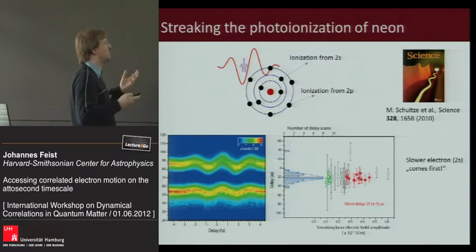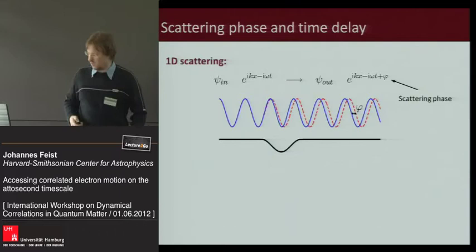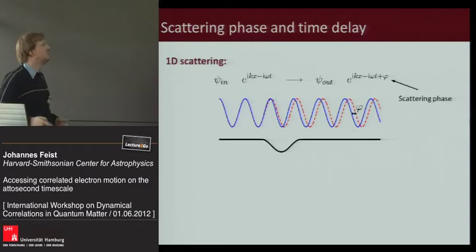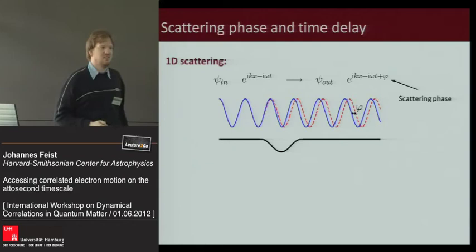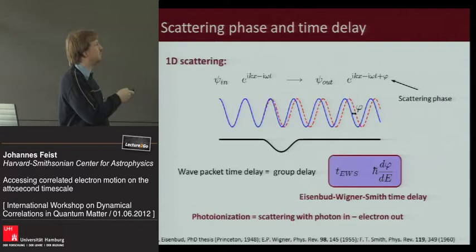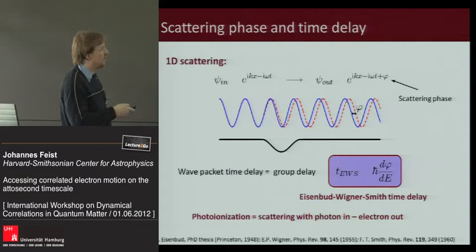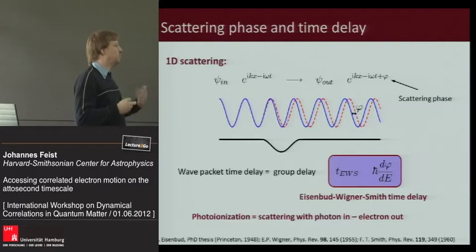The real question is: what are we actually measuring? In quantum mechanical scattering, all information about the event is encoded in the scattering phase. Over 50 years ago, Eisenbauer, Wigner, and Smith showed that the time delay in scattering for a wave packet around an energy is the energy derivative of the scattering phase. This Eisenbauer-Wigner-Smith time delay is what you could hope to access in streaking, representing the time delay of photoionization — scattering with a photon coming in and an electron going out.